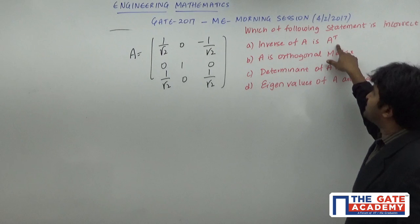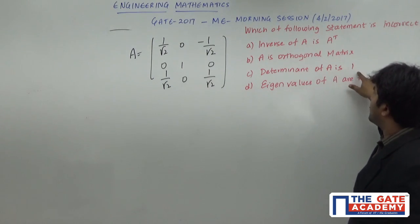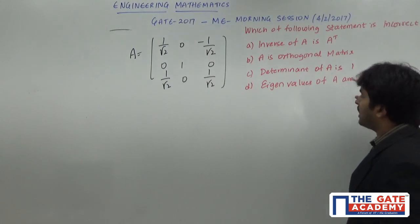a) Inverse of A is A transpose, b) A is an orthogonal matrix, c) Determinant of A is 1, d) Eigenvalues of A are real.